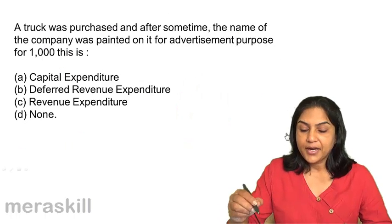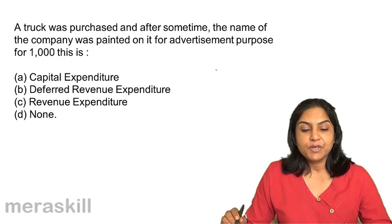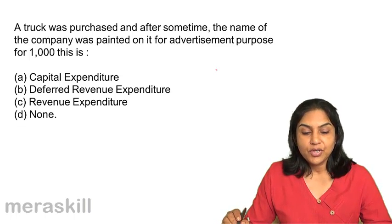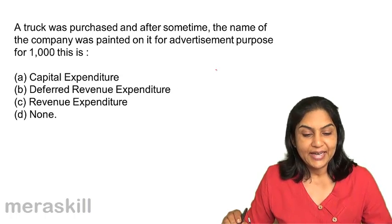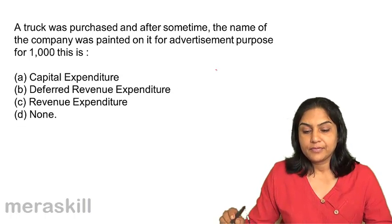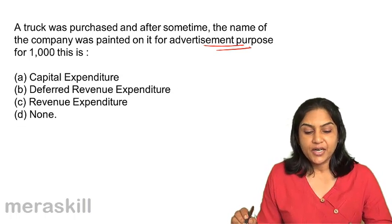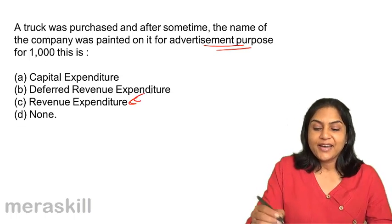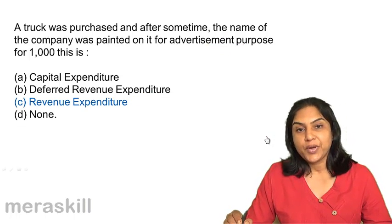Next. A truck was purchased and after some time, the name of the company was painted on it for advertisement purposes for 1,000. This is A: capital expenditure; B: deferred revenue expenditure; C: revenue expenditure; D: none. Since it is for advertisement purposes — painting the name on the truck — the answer is C: revenue expenditure.